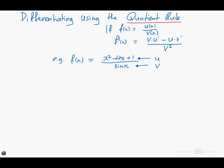So let's go ahead with this. u dash is the derivative of x squared minus 4x plus 1, which is simply 2x minus 4. What about v dash? v dash is the derivative of the bottom function. sin x, v dash is cos x. Nothing hard so far.